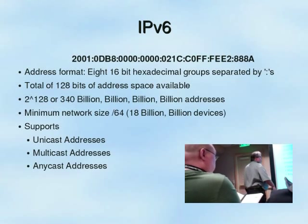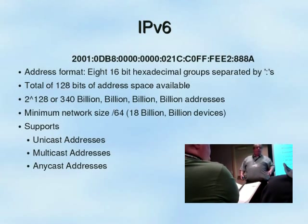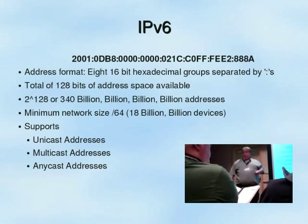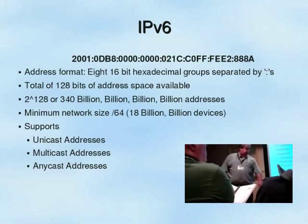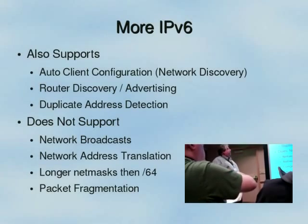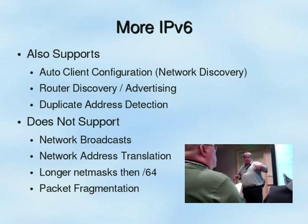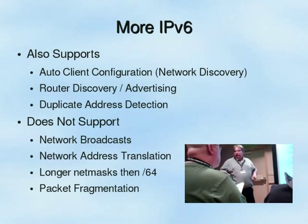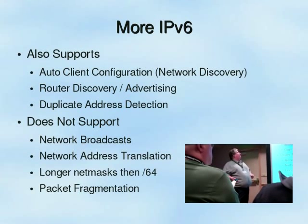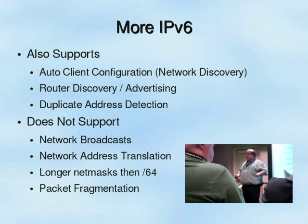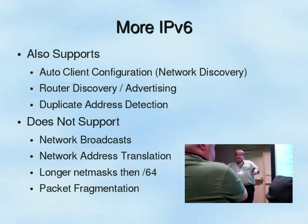The minimum network size is 64 bits, so we split the address in half. This drives people crazy — why do I want 18 billion billion devices on my LAN? We do that because of auto-configuration. IPv6 supports unicast, multicast, and anycast addresses. It also supports auto-configuration as well as network discovery. A client can actually create its own IP address for IPv6 — you don't have to run a DHCP server, but you do have to properly advertise the address out on your LAN from your router. It also supports router discovery, so if you're running VRRP or another protocol with multiple routers, you automatically get that with IPv6.